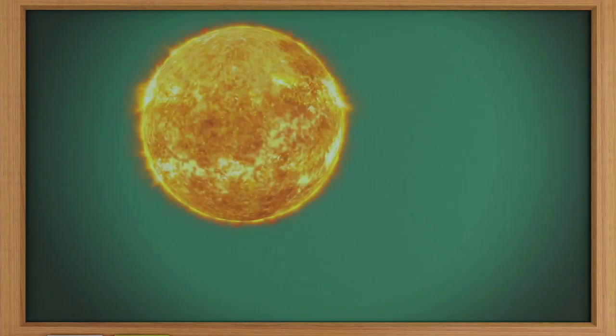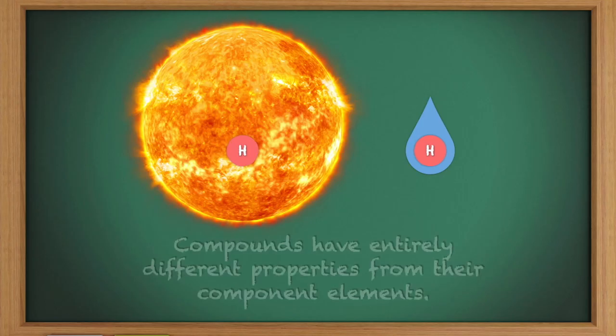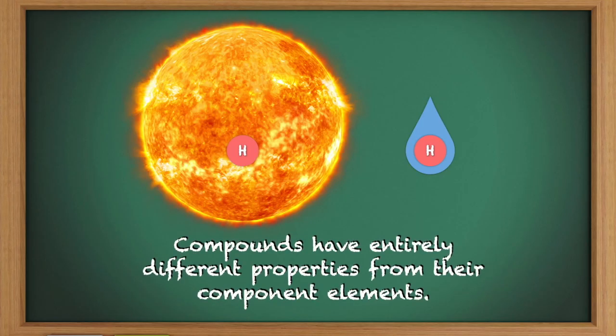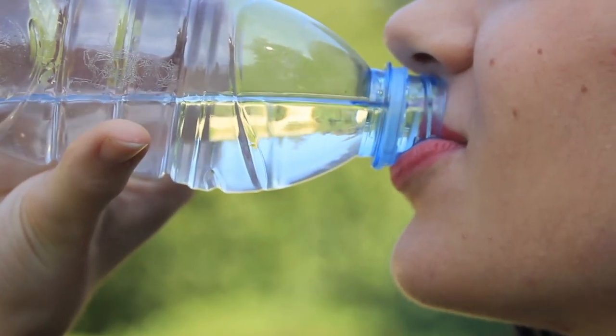This answers our previous question about the sun and water, that although both have hydrogen as their component element, the resulting compounds have entirely different properties. This is why we can drink water that has hydrogen in it, but we cannot do the same with the sun.